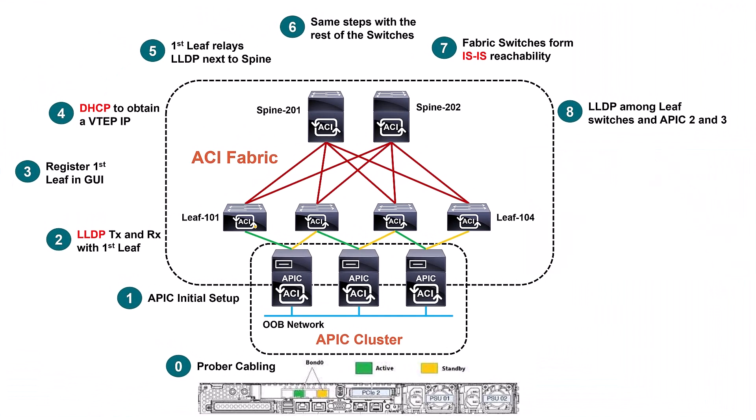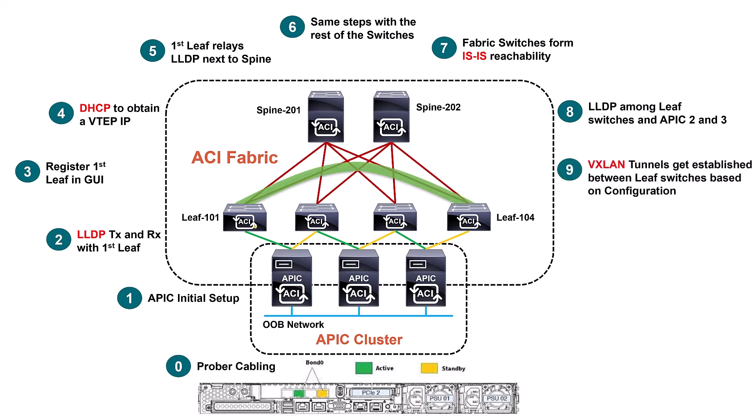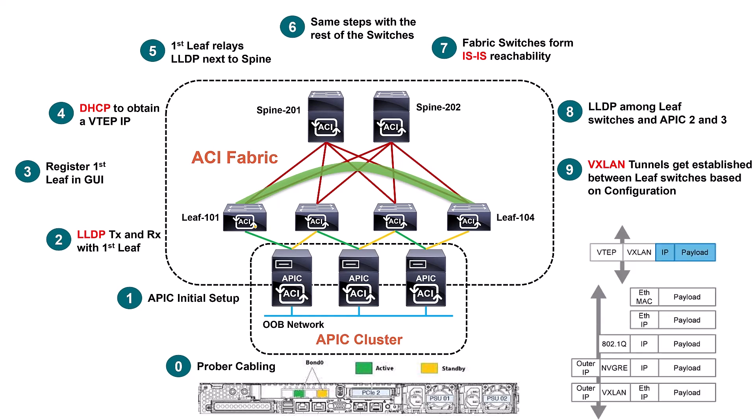One more step relates to the data plane. Everything mentioned so far — LLDP, DHCP, and ISIS — represents the control plane. But the data plane is VXLAN. VXLAN tunnels are established between each and every leaf switch in the fabric to forward data plane traffic. This is based on configuration and policies you apply later, but every single packet in the ACI fabric is encapsulated within a VXLAN header.